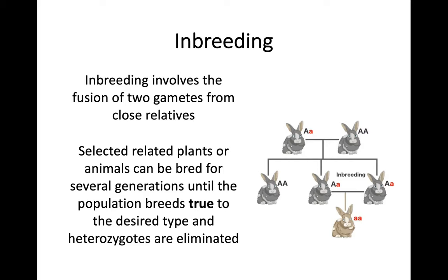Inbreeding involves the fusion of two gametes from close relatives. Selected related plants or animals can be bred for several generations until the population breeds true to the desired type and heterozygotes are eliminated. If you're not entirely comfortable with homozygotes, heterozygotes, dominant genes, and recessive genes, I suggest you look at the variation and inheritance video from National 5 on the YouTube channel. We won't go into a lot of genetics detail here, but the terminology will be used frequently.